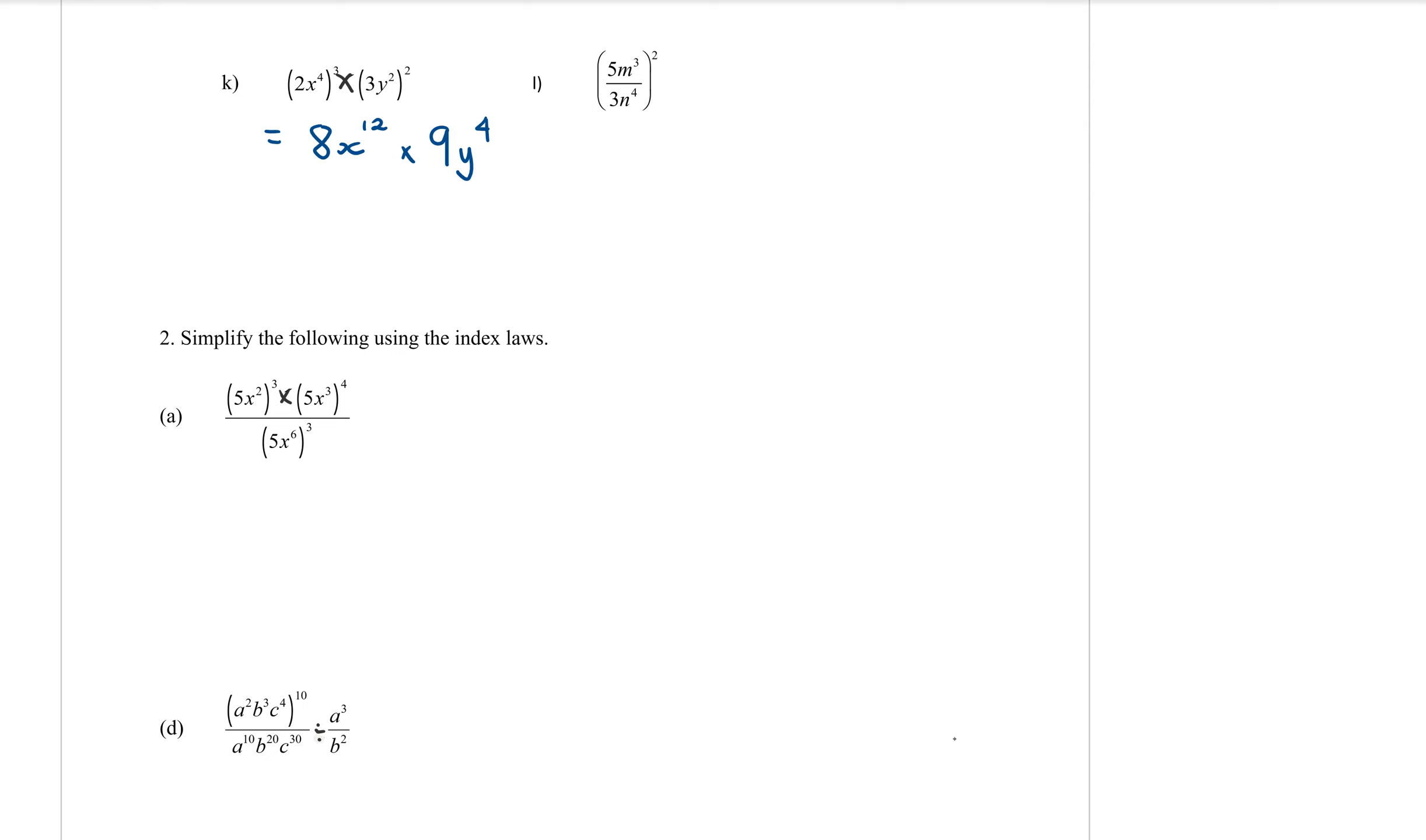Then we want to times those together. So eight times nine is 72. We have X's and we have Y's. We don't add the powers for those. You only add the powers if they have the same base. If they have a different base, they just have to sit next to each other. So X to the power of 12 and Y is the power of four.